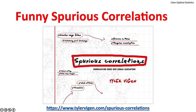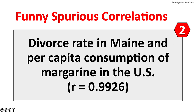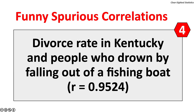Tyler Vigen has collected funny spurious correlations in his book and on his website. Examples include: per capita cheese consumption and the number of people who died by becoming entangled in bedsheets (R = 0.9471); the divorce rate in Maine and per capita consumption of margarine in the US (R = 0.9926); the age of Miss America and the number of murders by steam, hot vapors, and hot objects (R = 0.8701); and the divorce rate in Kentucky and people who drowned by falling out of fishing boats (R = 0.9524).